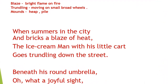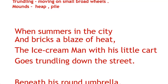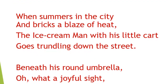Let me discuss the first stanza of the poem, Ice Cream Man. The poet says that in the summer season, the Ice Cream Man comes with his little cart and his cart moves on small broad wheels. The poet says: 'When summer's in the city and bricks a blaze of heat, the Ice Cream Man with his little cart goes trundling down the street.' In the last line of the first stanza, the poet has used a difficult word — trundling down — which means moving on small broad wheels. Is that clear to you, my dear children?